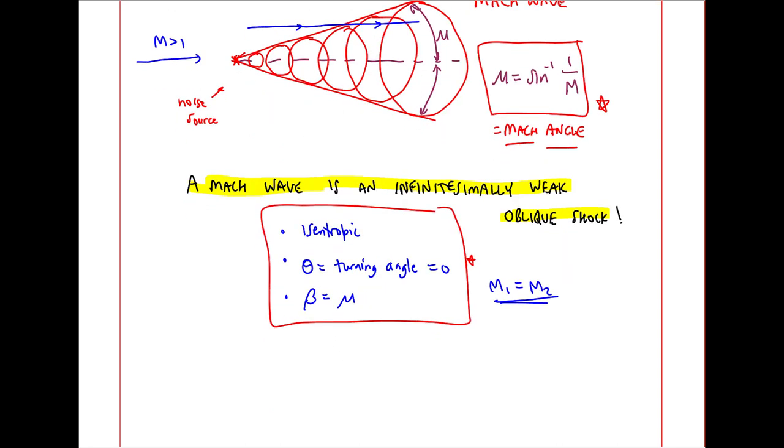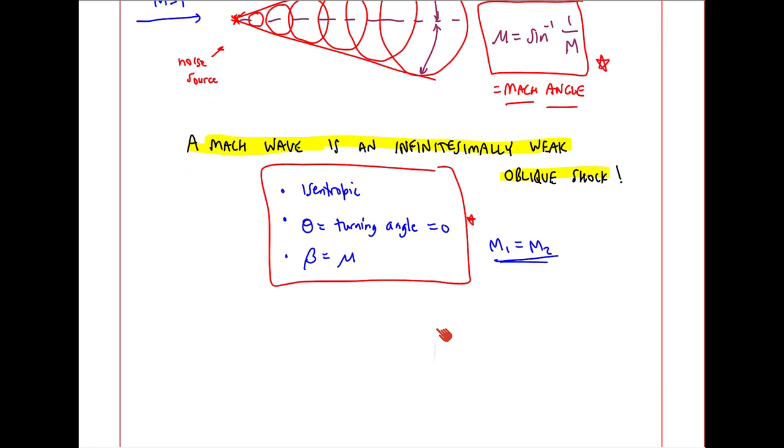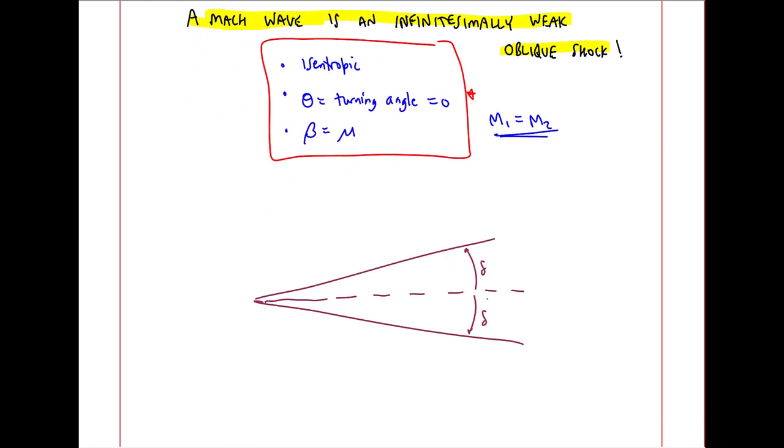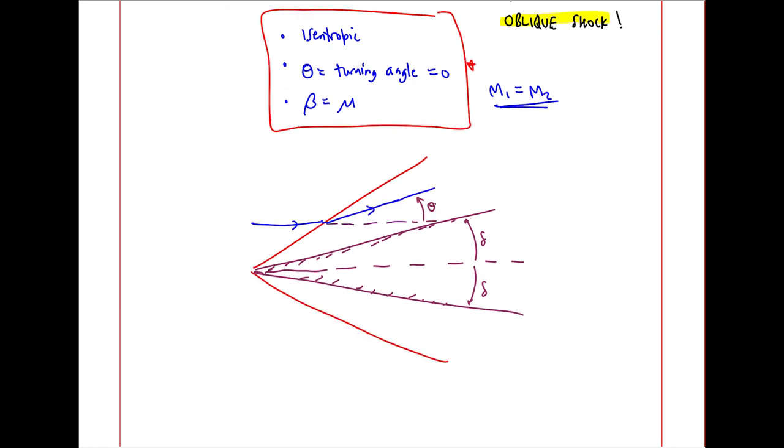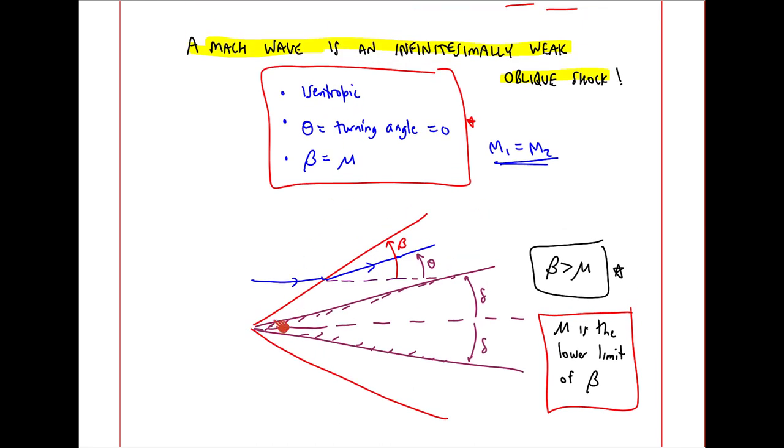Now let's replace this noise source by our 2D wedge of half angle delta. Now we get our oblique shock. And the flow does turn by angle theta. And the shock itself is at angle beta. The purpose of this comparison is to show that beta is always greater than mu. In other words, mu is the lower limit of beta. In this lower limit, the flow was isentropic. But when you have an actual oblique shock, it's no longer isentropic.